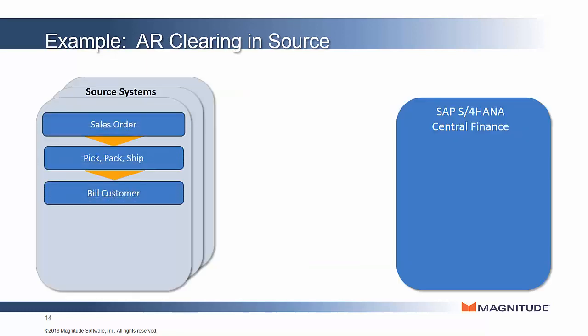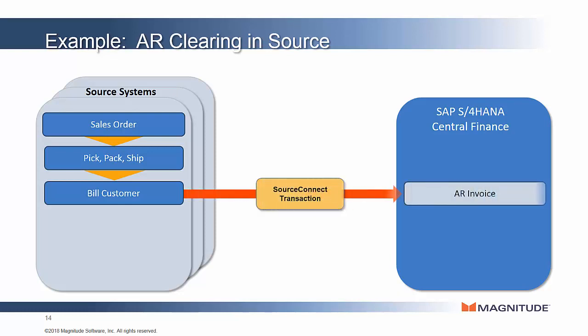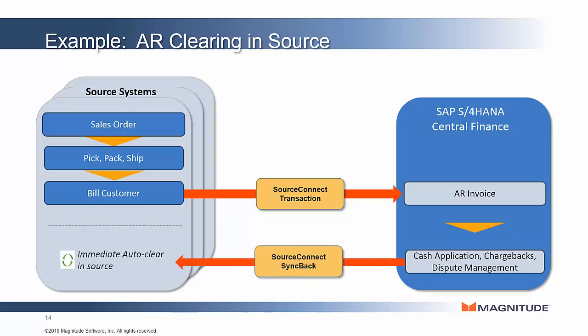A similar but opposite situation occurs on the accounts receivable side. In this case, the sales order, logistics, and billing or invoicing occurs in the source system, and SourceConnect Transaction replicates that customer invoice into Central Finance. At that point, cash can be received from the customer and applied to the invoice, or other actions taken against that invoice, and those transactions will be replicated back to the source system by SourceConnect Syncback.